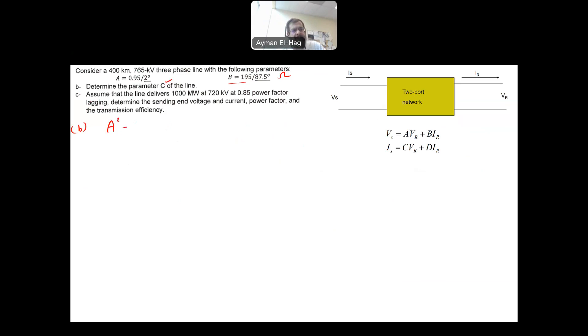And as I mentioned, we will use A squared minus BC is equal to 1. So it means that A squared minus 1 is equal to BC. And hence your C is equal to A squared minus 1 divided by B. So that is the formula to find your C. So your C is equal to A squared, which is 0.95 angle of 2 squared minus 1 divided by B. B is equal to 195 angle of 87.5. And this is equal to 0.9025 angle of 4 minus 1 divided by 195 angle of 87.5.